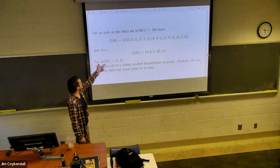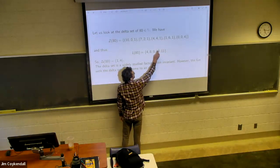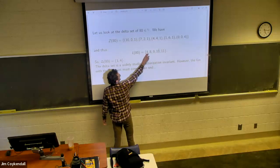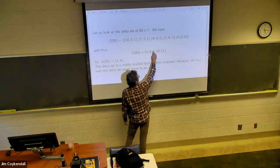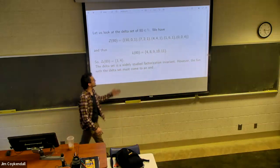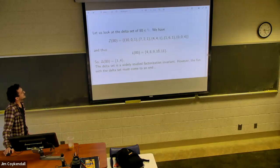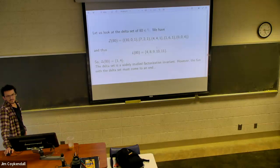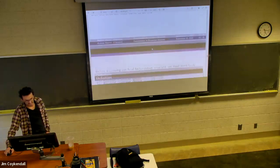So then delta of 80 is simply, we'll really use it this way, I guess. It's 8 minus 4, which is 4, 9 minus 8 is 1, 10 minus 9 is 1, 11 minus 10 is 1. So your set becomes 1 and 4. This is a super studied invariant, but I figured the font has that delta, right? So why not that? And then we move on.